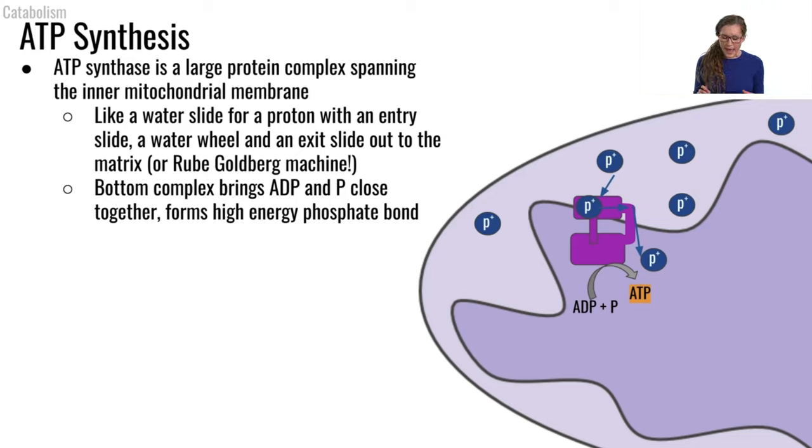And then as that water wheel turns, it's going to bring the bottom side of ATP synthase. It's going to bring an ADP and a phosphate very close together. And so as the ATP synthase turns and brings the ADP and phosphate very close together, that causes the phosphate to get added to ADP to form a phosphate bond and turn it into ATP.